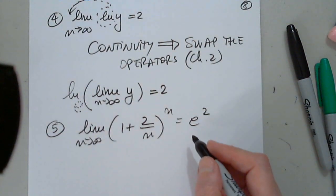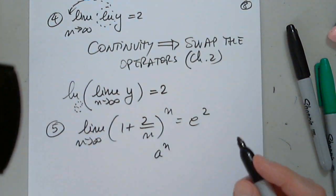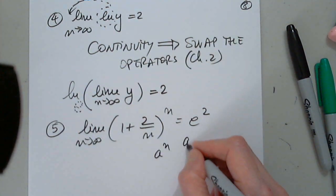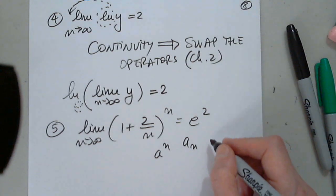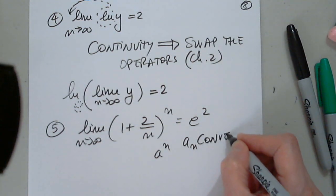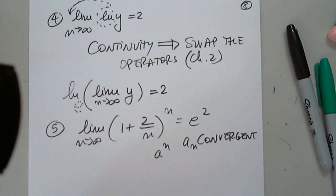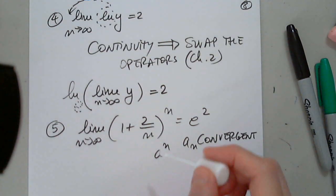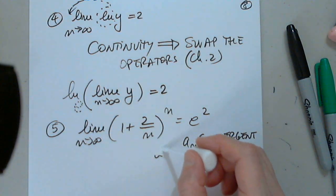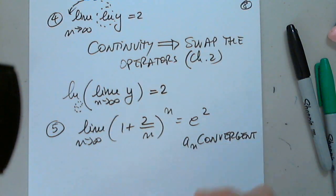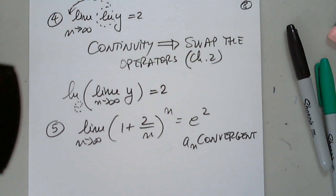So therefore we conclude that a sub n is convergent. This was 53.